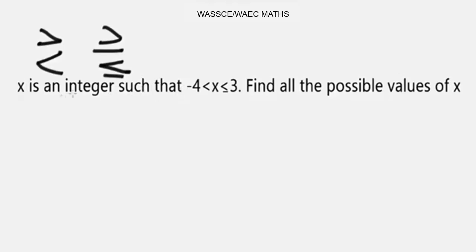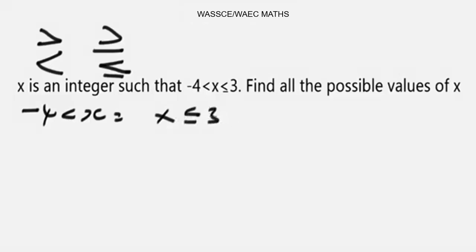First, you have to be able to interpret inequalities. '-4 < x' means that x is greater than -4. Whereas 'x ≤ 3' means that x is less than or equal to 3. So here, x is greater than -4, and here, x is less than or equal to 3.